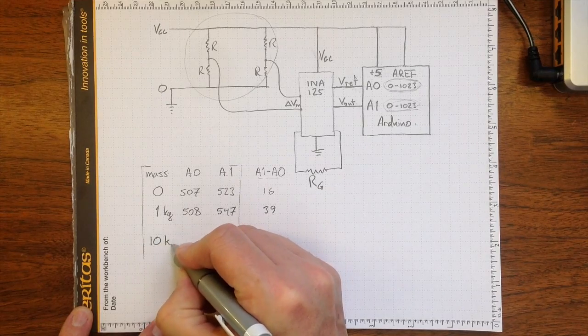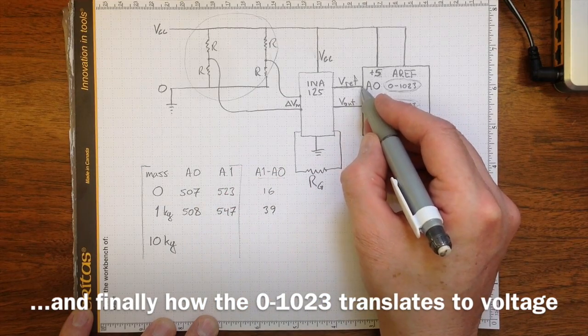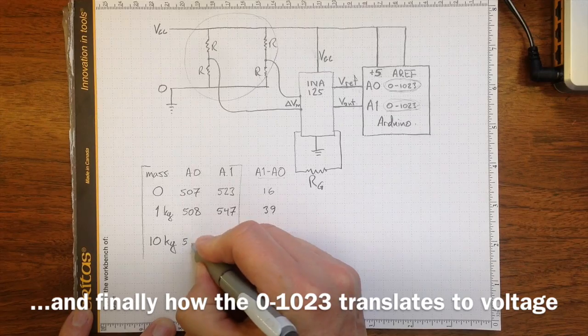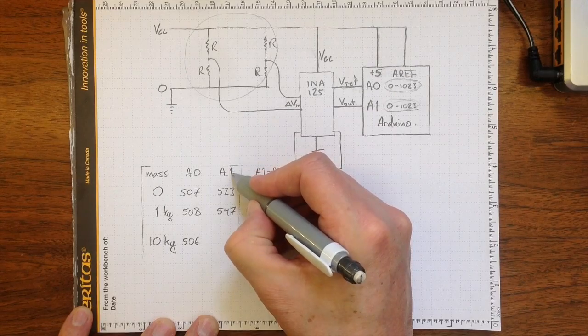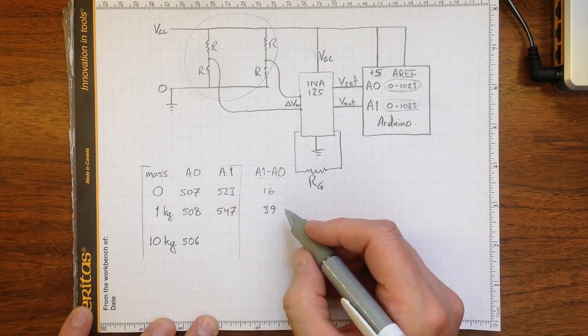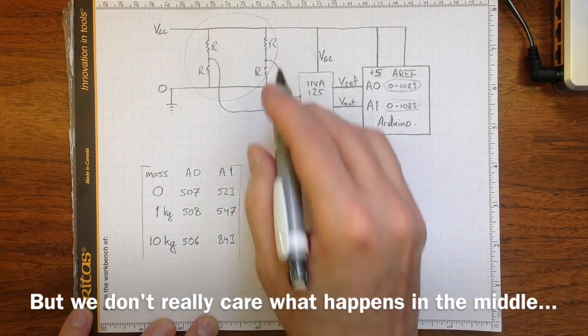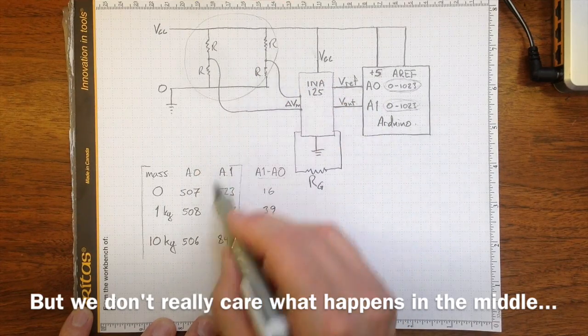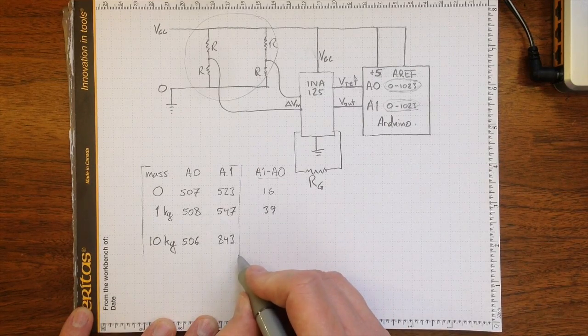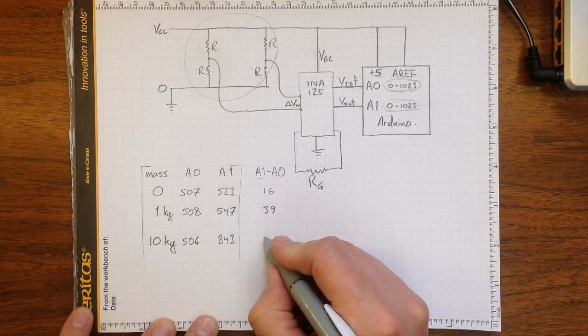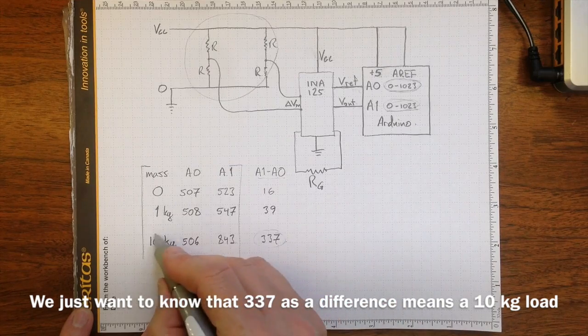10 kg. I would expect to see still this A0, this reference voltage, staying about 2.5 volts. Might be 507 again, might be 506. It'll be some value. And then when we measure A1, it's going to go up considerably. It might be 843, indicating that we've got considerably more change in the resistances because we've got a considerably bigger load here. 843 minus 506 is going to be 337. So that's the difference that corresponds to 10 kg.